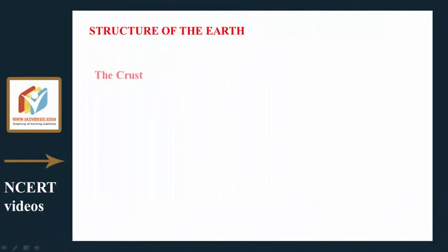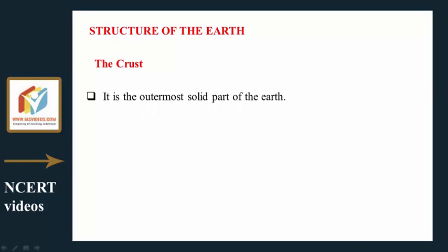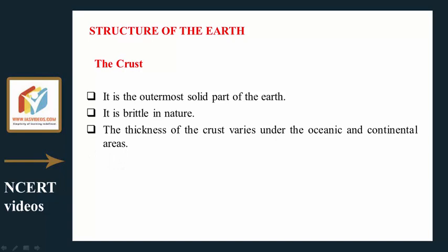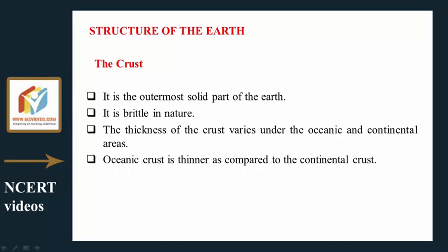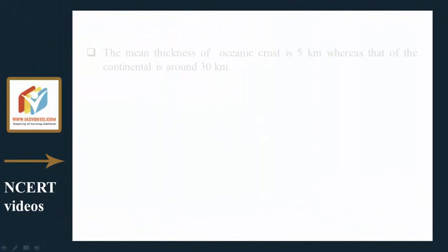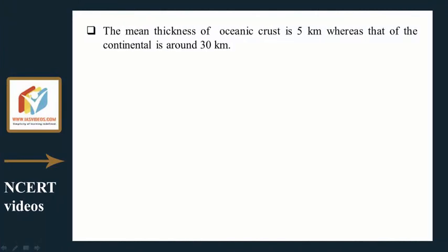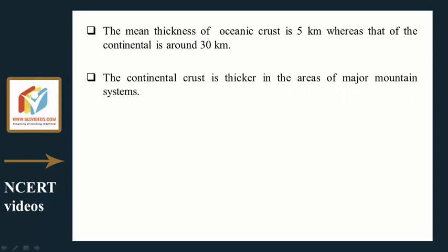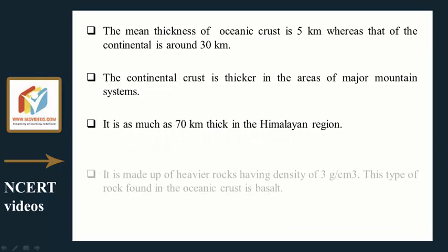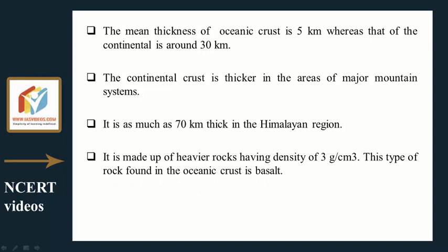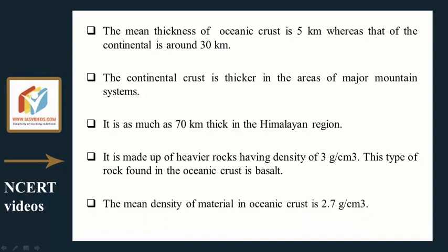Structure of the earth — The crust: It is the outermost solid part of the earth, brittle in nature. The thickness of the crust varies between oceanic and continental areas. Oceanic crust is thinner, with a mean thickness of 5 kilometers, while continental crust is around 30 kilometers. The continental crust is thicker in major mountain regions — up to 70 kilometers in the Himalayan region. Oceanic crust is made of basalt with a density of 3 g/cm³; the mean density of continental crust is 2.7 g/cm³.